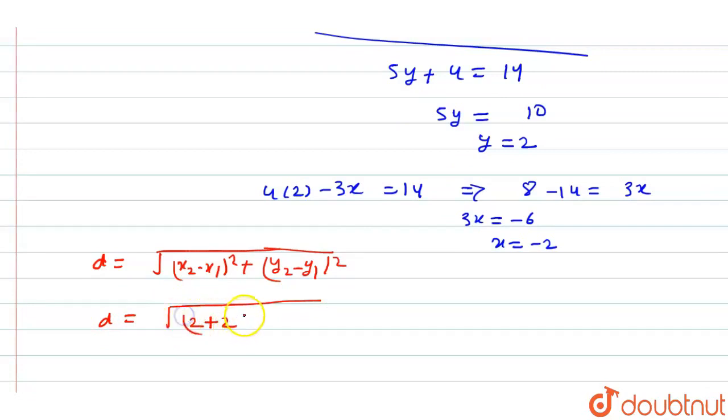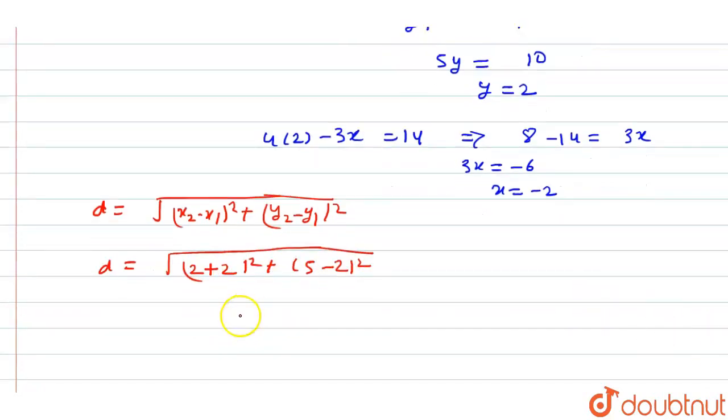x₂ is 2 and x₁ is -2, so (2-(-2))² = 16. y₂ is 5 and y₁ is 2, so (5-2)² = 9. Therefore, d = √(16+9) = 5 units.